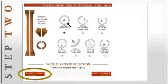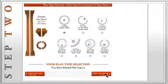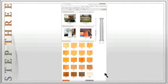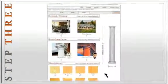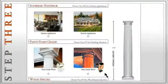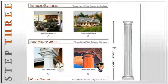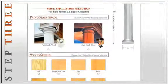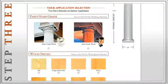Now, let's go to the last step by clicking on View Step 3. On this page, you'll finish your column by selecting an application, a finishing option, and a species of wood. First, select either the Interior or Exterior application. We'll select the Interior application option. Then, if you want to paint your column, choose the Paint Grade Wood option, or select Stain Grade Wood if you plan to stain your column, and that's what we'll choose.